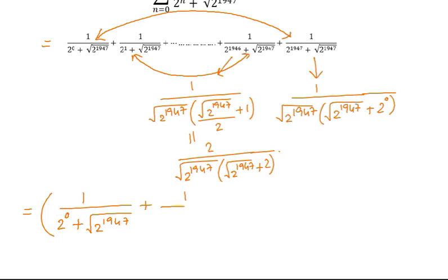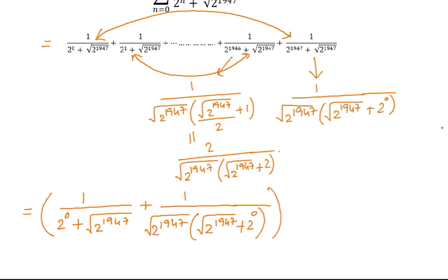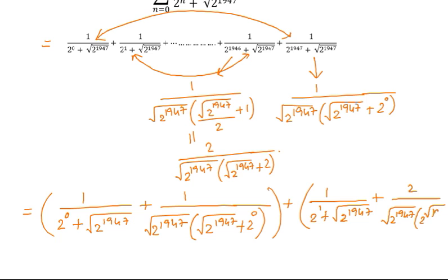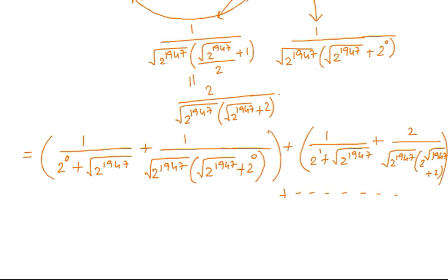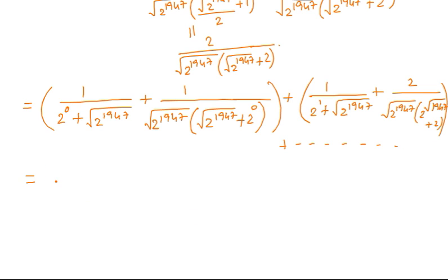Doing this, we can see that each such pair gives the same result. Similarly, the second from the beginning and the second from the end form another pair. In this way, we can create pairs from the beginning and the end throughout the series.